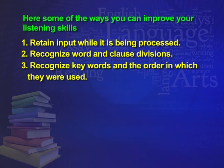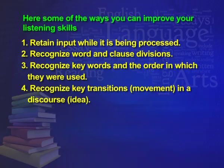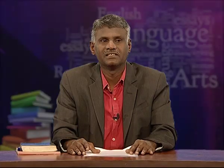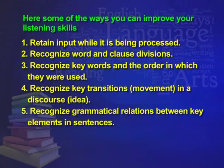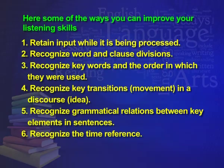Third, recognize the key words and the order in which they are used. For example, in 'if speech is silver and silence is golden,' the words speech, silver, silence, and golden are the key words — recognize them so that you can reproduce later. Fourth, recognize key transition movements from one idea to another as you listen. Fifth, recognize the grammatical relations between the elements in the sentence — how the first and second ideas are grammatically connected. Sixth, recognize the time reference — whether something was said in the past or the present.